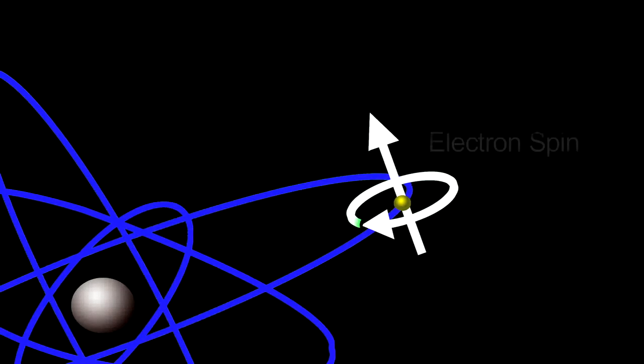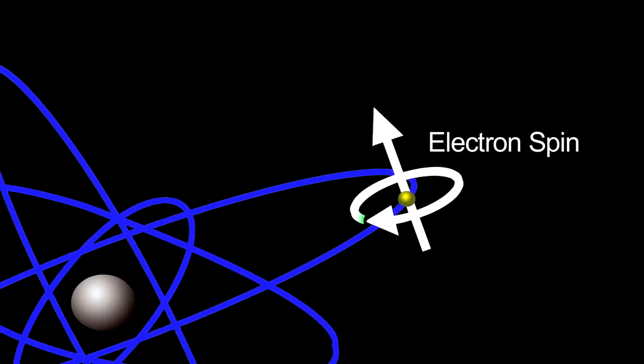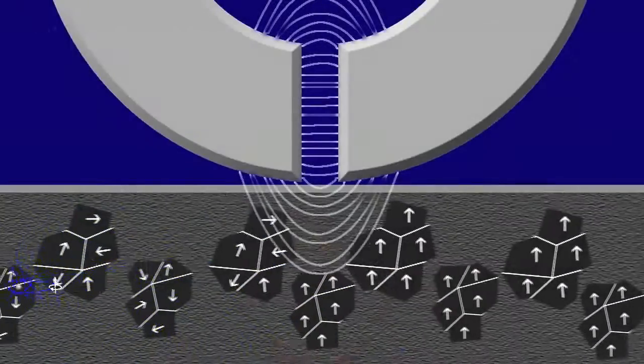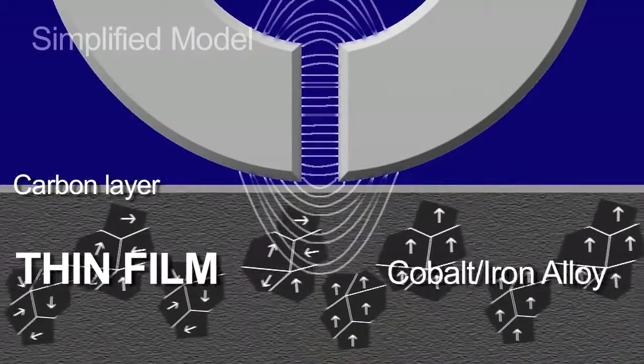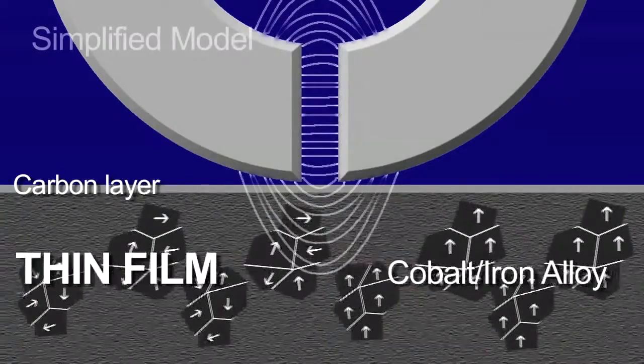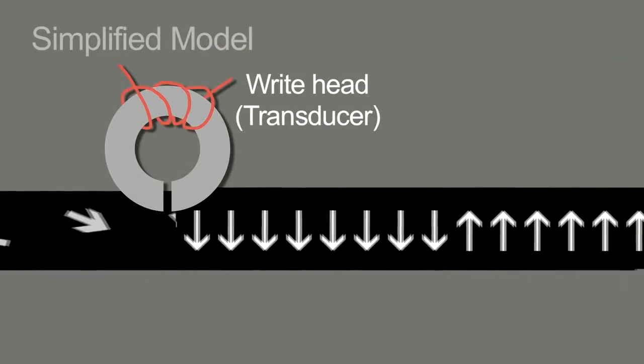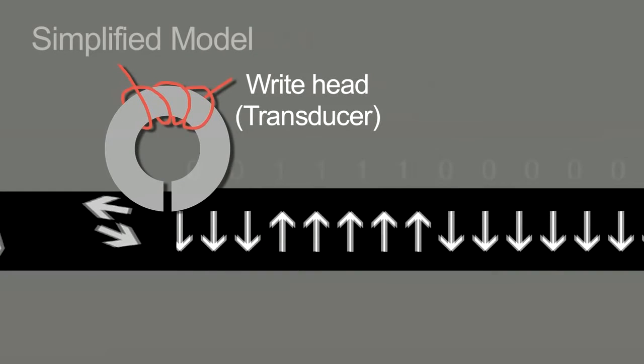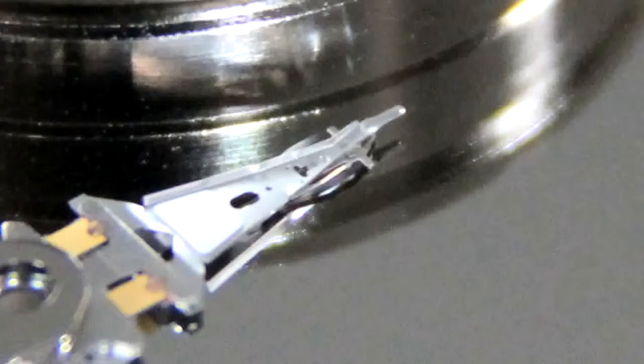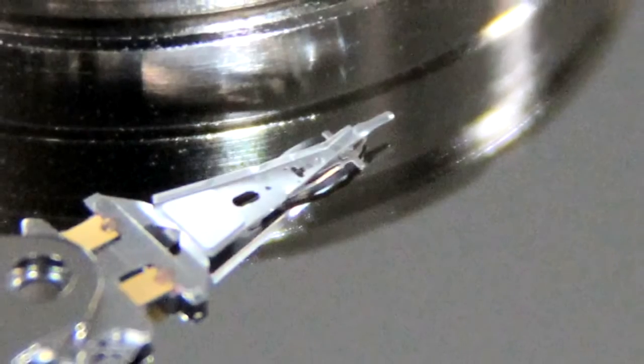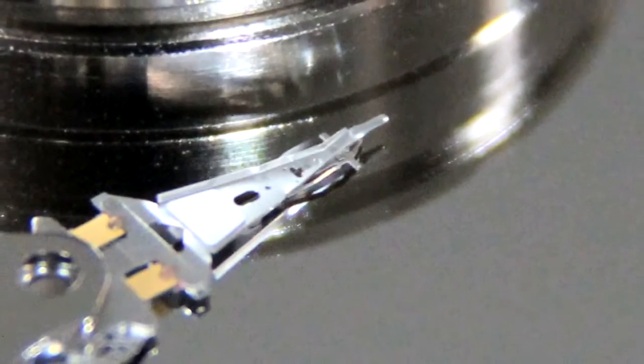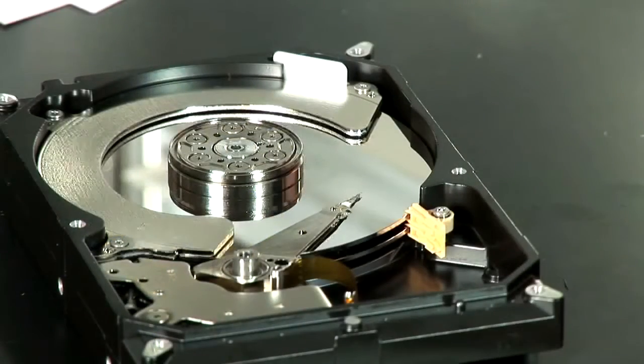The data is recorded in magnetic domains that are very small surface area on the disk. The transducer on the head senses for that domain the direction of the magnetism and whether it is a one or a zero and that's a bit.